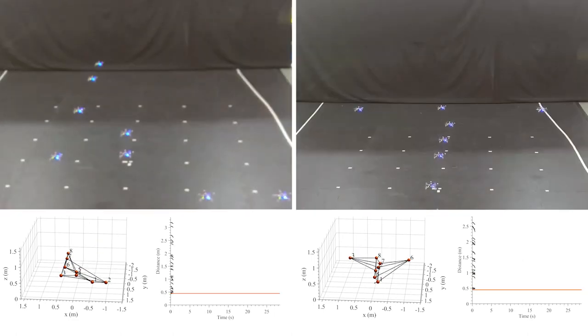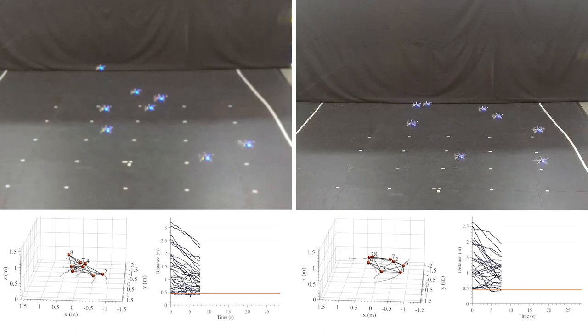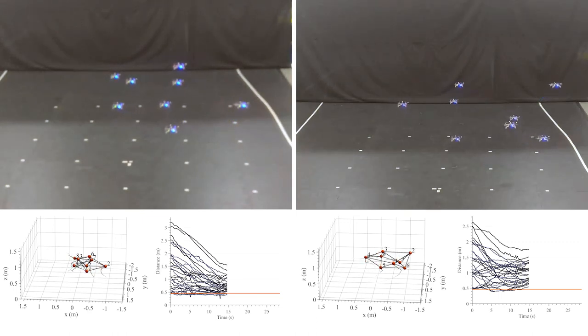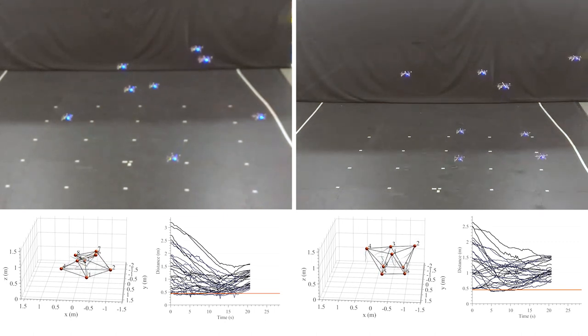In the last set of experiments, we test our approach with eight agents starting from two different initial positions. Inter-agent distances among all quadrotors are plotted versus time. By moving along a collision-free direction instead of the desired direction, vehicles respect the minimum safety distance of 45 centimeters and avoid collisions as they converge to the desired formation.